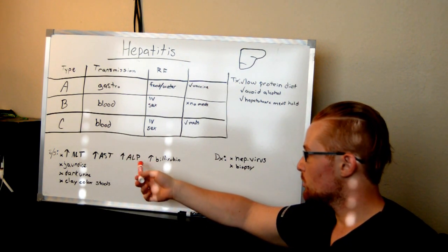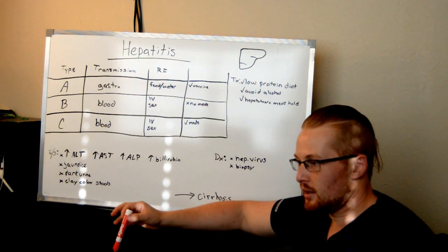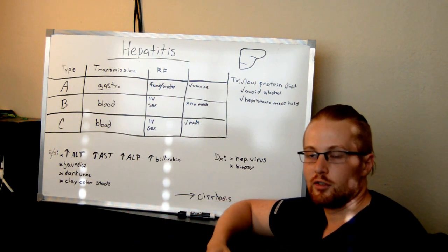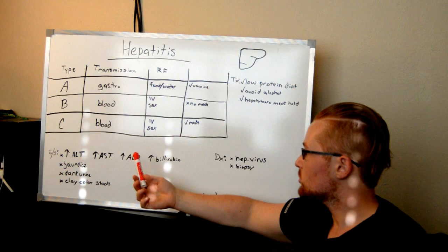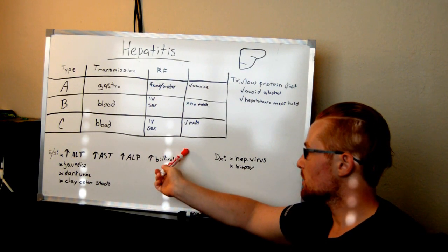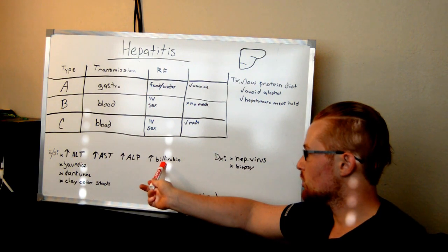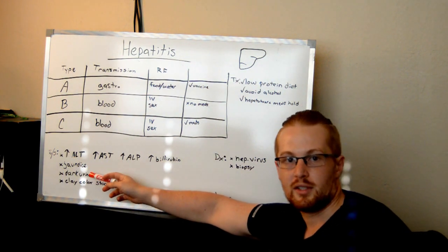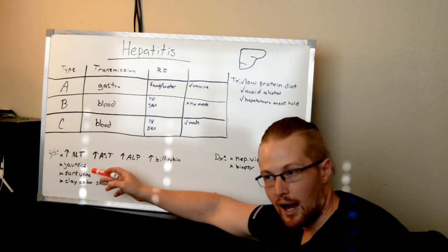You'll also see elevated bilirubin. The liver, like the kidney, has filtration properties, and so it's unable to effectively filter, and it ends up in elevated bilirubin in the bloodstream. And you can see jaundice, which is the yellowing of the skin and yellowing of the eyes.